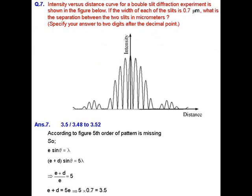IIT JAM Physics JTP 2017 NET question number 7. In this question, an intensity versus distance curve for a double slit diffraction experiment is shown in the figure. If the width of each of the slit is 0.7 micrometers, what is the separation between the two slits in micrometers? Now, as we can see by the graph given to us that 5th order of pattern is missing from the figure. So a sin theta equals lambda, as we know that is the condition, and a plus d sin theta equals 5 lambda, as 5th order of pattern is missing.